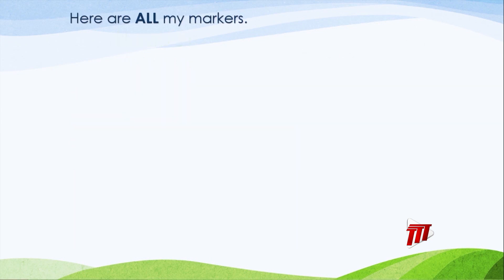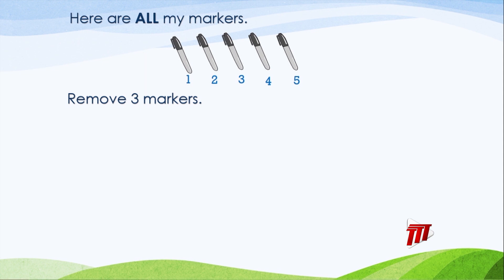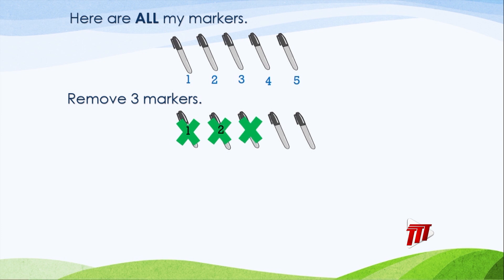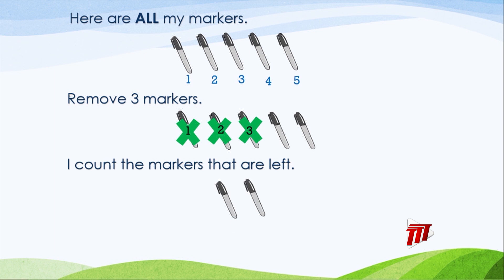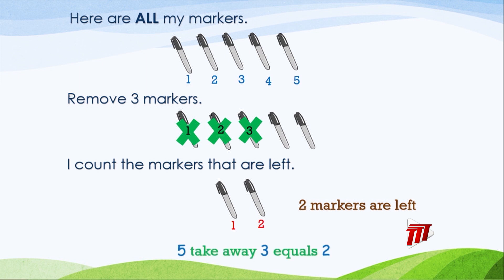Let's go to the screen. Here are all my markers — one, two, three, four, five. I remove three markers — one, two, three. I count the markers that are left — one, two. Two markers are left. Five take away three equals two.